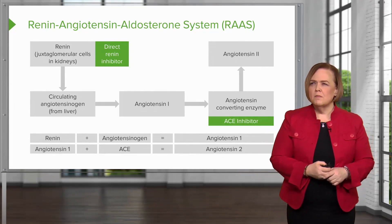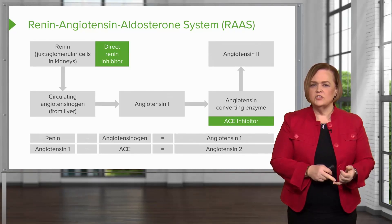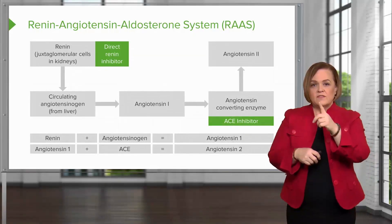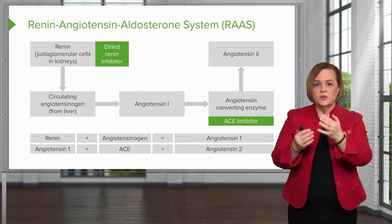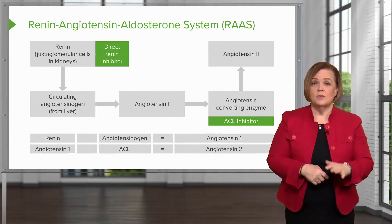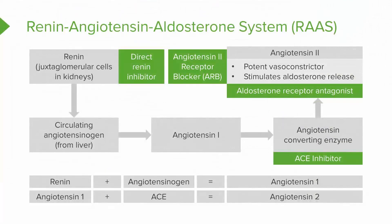What if I could come up with a drug that made less ACE available — less angiotensin-converting enzyme? I'd still have lots of renin, angiotensinogen would be there, I'd have angiotensin I — but if I have less ACE, I have less available to convert angiotensin I to angiotensin II. That means I will be able to lower my patient's blood pressure. So we've talked about direct renin inhibitors and ACE inhibitors.